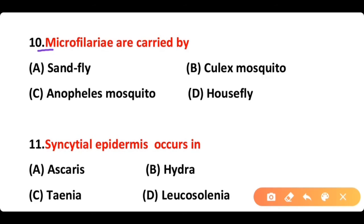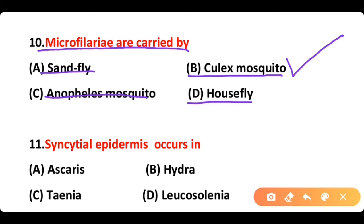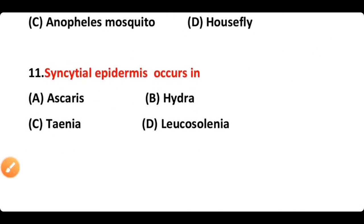Question 10: Microfilaria are carried by: A) sand fly, B) Culex mosquito, C) Anopheles mosquito, D) housefly. The correct answer is option B. Microfilaria are carried by Culex mosquito.